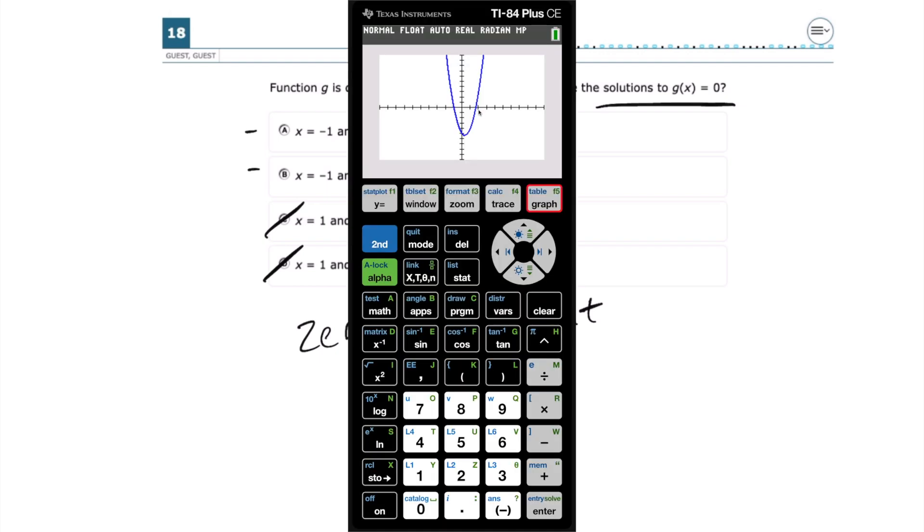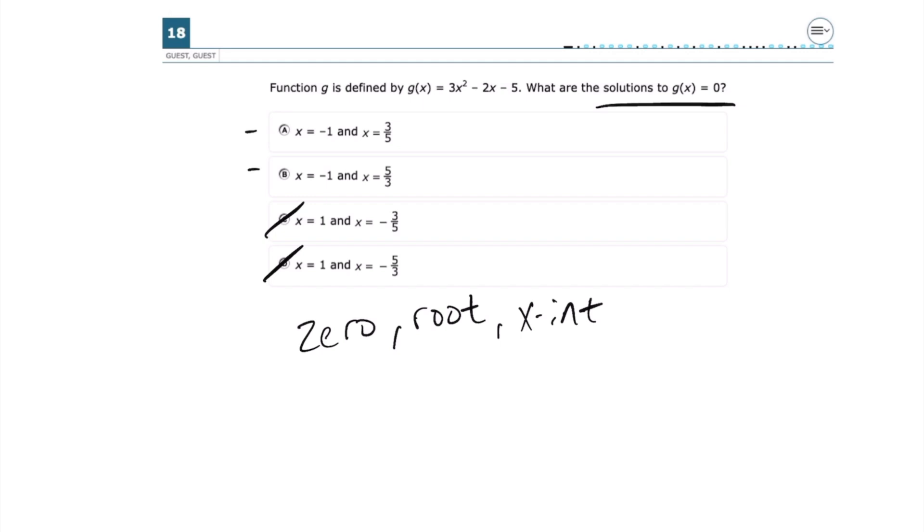And then my second x-intercept is between 1 and 2. It's a little bit closer to 2. So that means that looking at letter A and B, it's between either 3 over 5 or 5 over 3. Well, 3 over 5 we know is going to be less than 1. That's actually going to come out to 0.6.